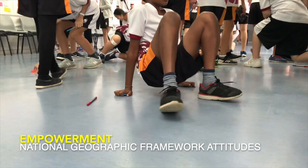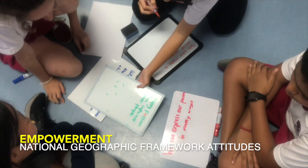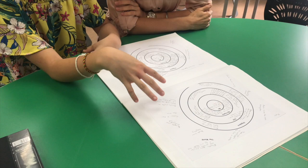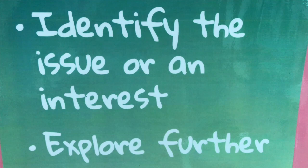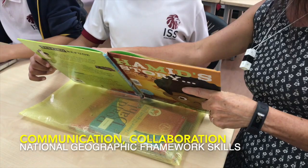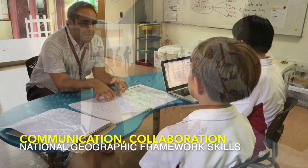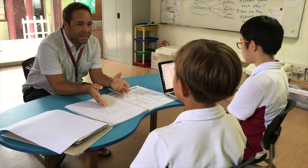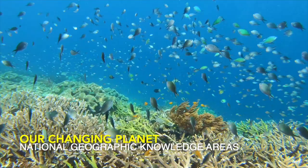The students were further empowered with the agency to create their own groups for the project, collaborating based on their interests. The students used their concentric circles across geographic scales to brainstorm questions and develop lines of inquiry for their projects. Through collaborating in self-directed learning groups with teacher mentors and local experts, the students made further connections to deepen their knowledge of real-life problems and issues across several knowledge areas, including those of the National Geographic Framework: the human journey, wildlife and wild places, and our changing planet.